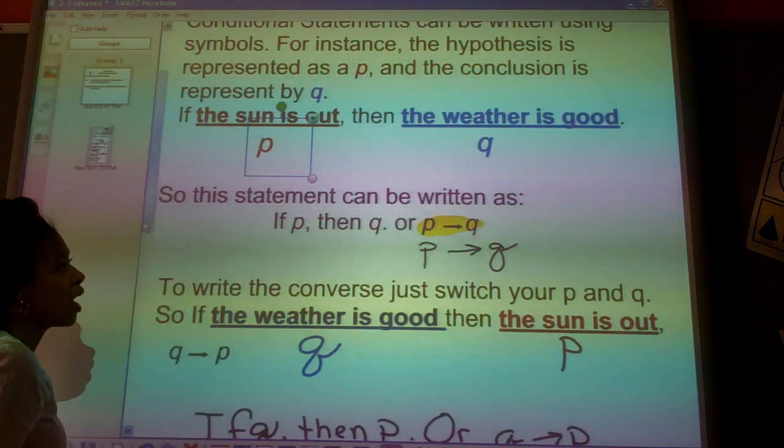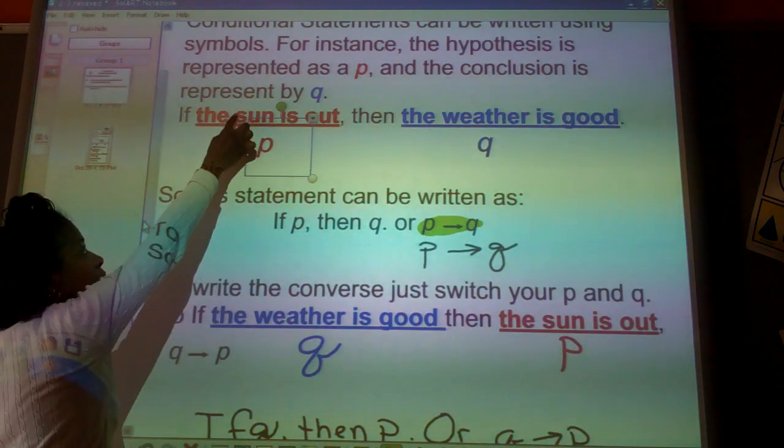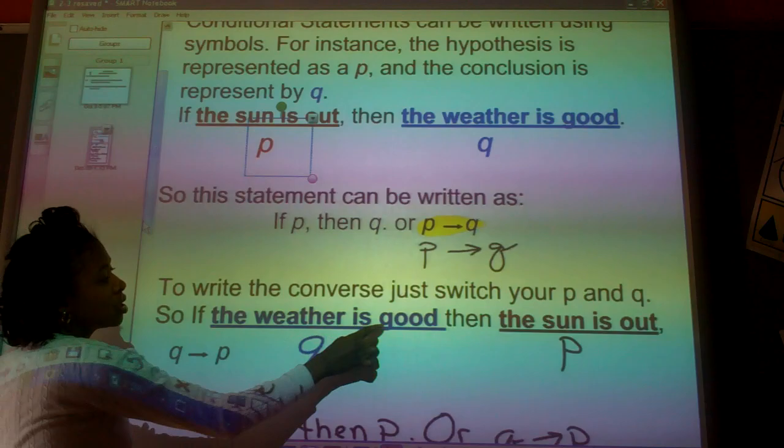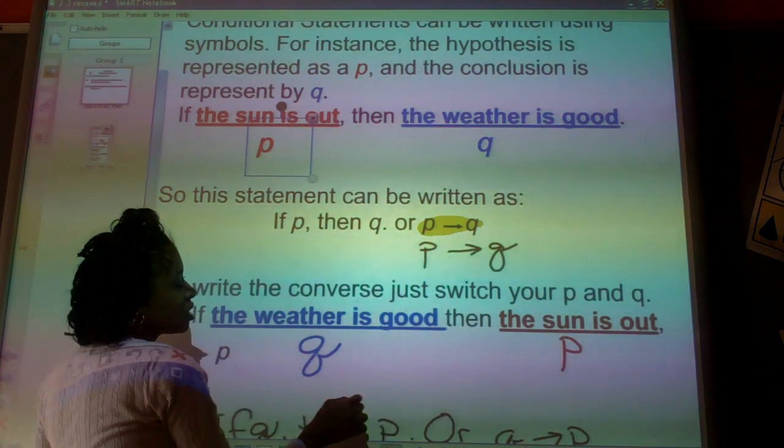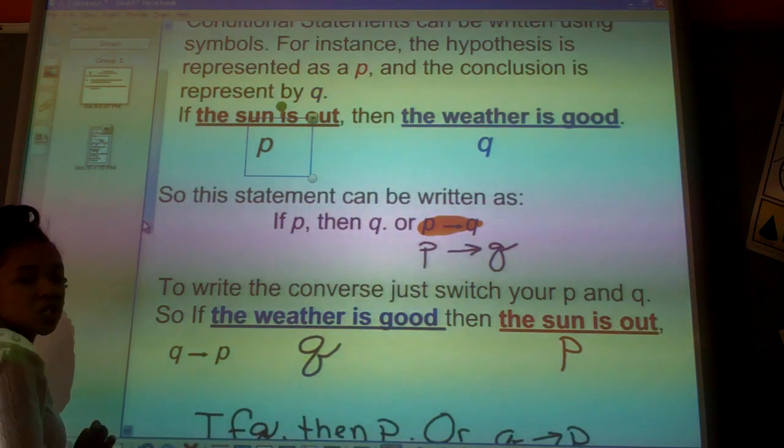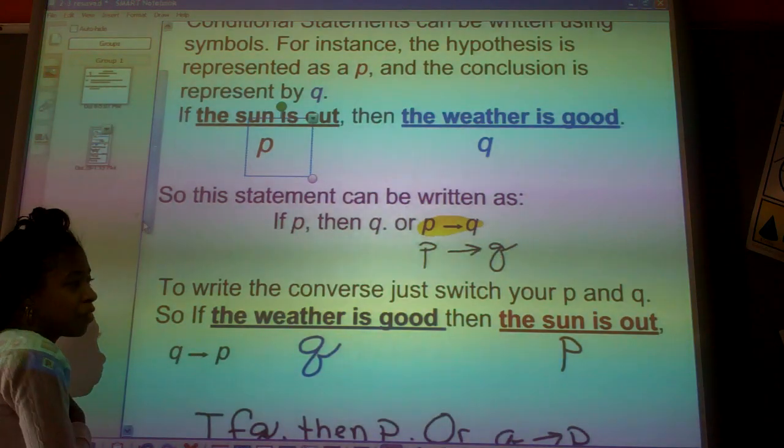Now, to write the converse, we know we should remember that the converse is just switched. So now from the original statement, I have here, if the weather is good, then the sun is out. When I switch them, now my Q is first because I've written the conclusion first and the P second, the hypothesis.